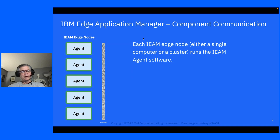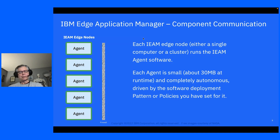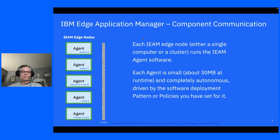To IBM Edge Application Manager, each node is really just an agent. Each agent is very small — it's about 30 megabytes of RAM at runtime — and it's completely autonomous, driven by the software deployment policies or pattern that you've set for it.